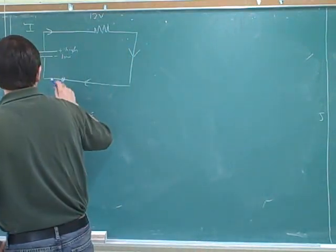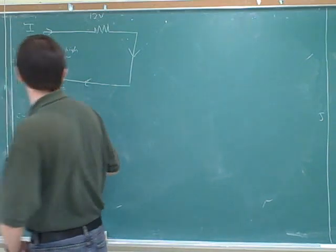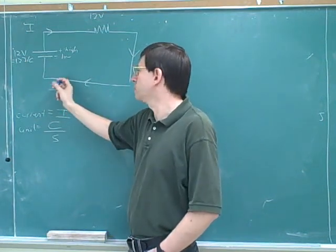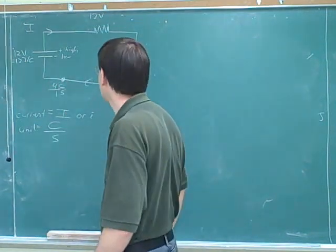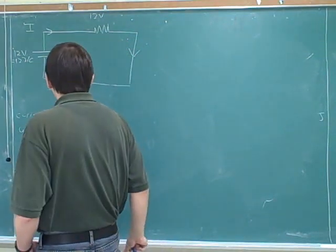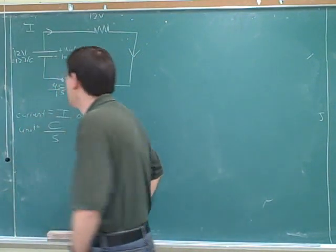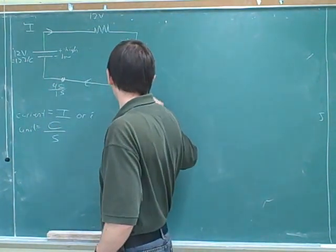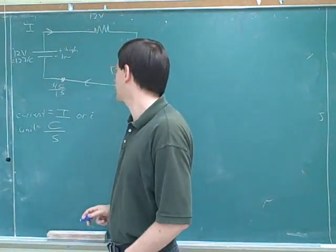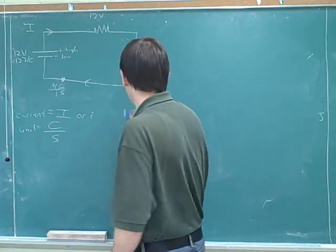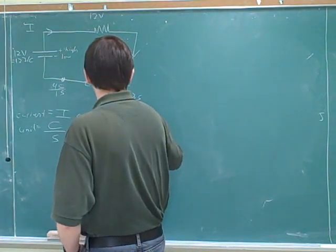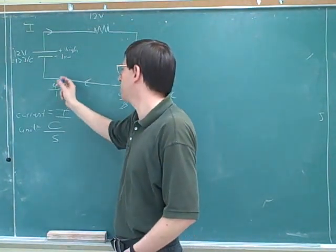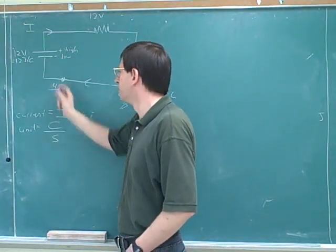You're using the trick we've seen: when we have a ratio of units, put a one on the bottom. This is telling us that if we watch this point for one second, four Coulombs will pass through here. That doesn't mean we're only watching for one second — if we wanted to watch for three seconds, we could. How many Coulombs would pass in three seconds? 12. We could do that with unit analysis to get 12 Coulombs.